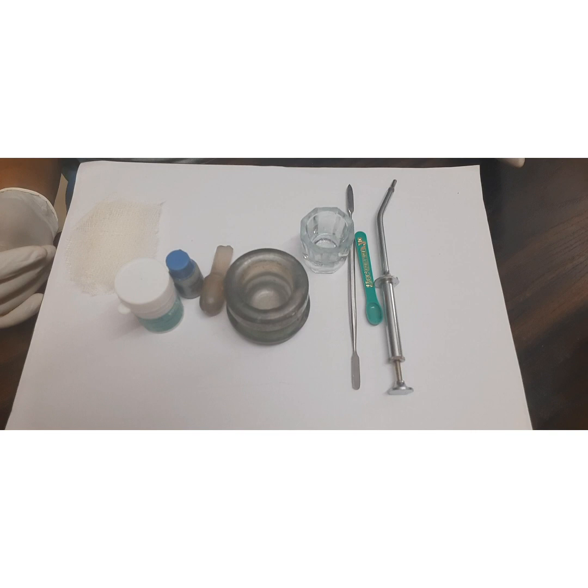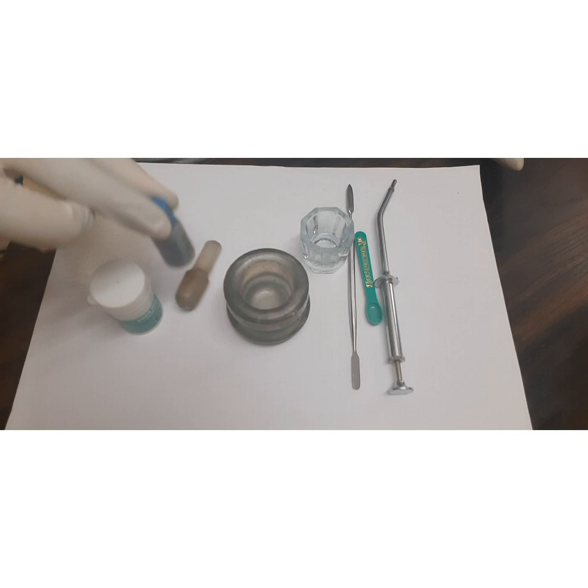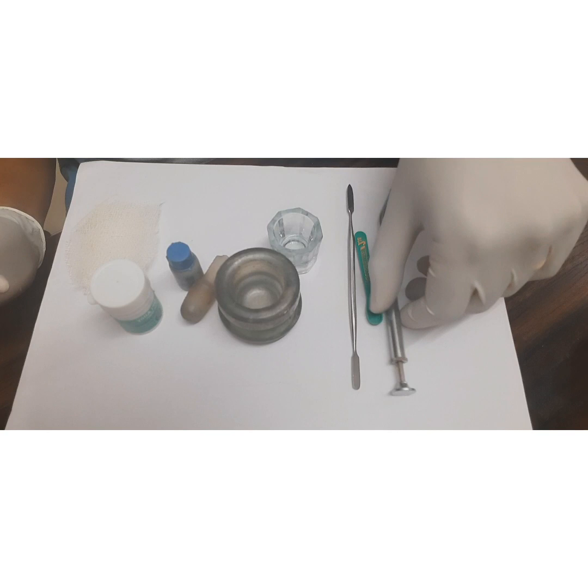First, look at the armamentarium which we require. You have the alloy powder, mercury, mortar, pestle, a dappen dish, and an amalgam carrier.